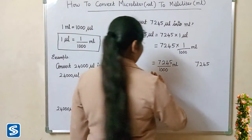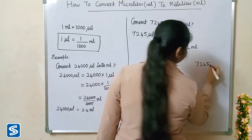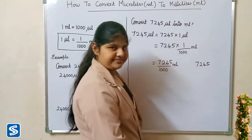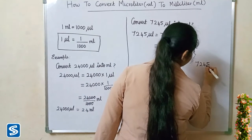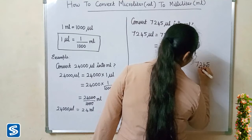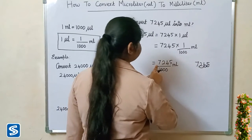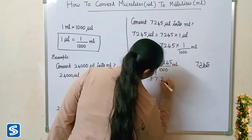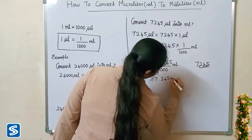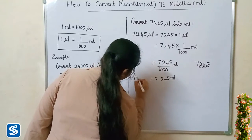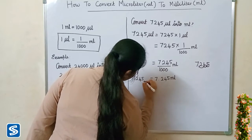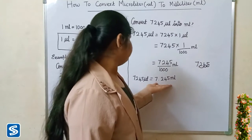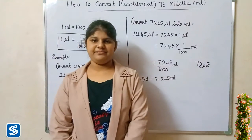The easy way to divide a number by thousand is to move the decimal point three places to the left, because thousand has three zeros: one, two, three. So when we divide seven thousand two hundred and forty five by thousand millilitres, our answer will be 7.245 millilitres. So 7,245 microlitres is equal to 7.245 millilitres.